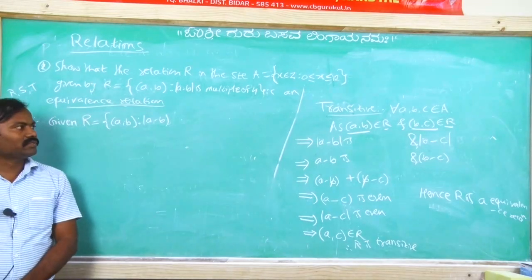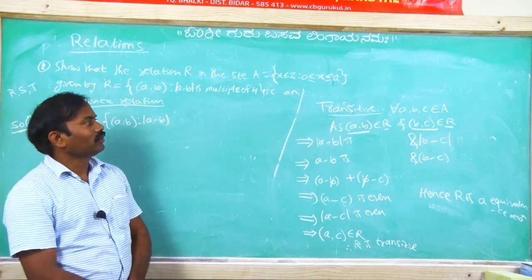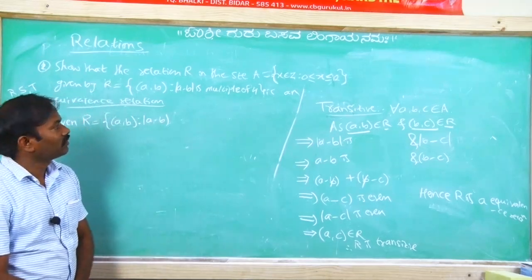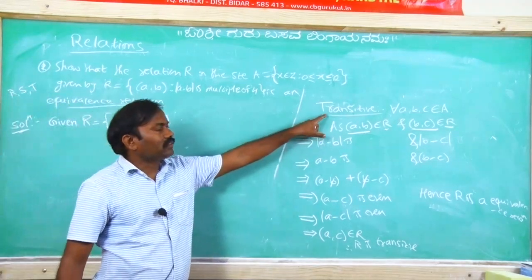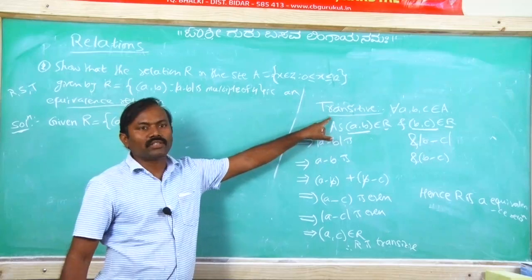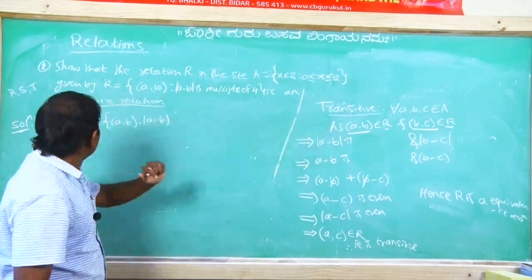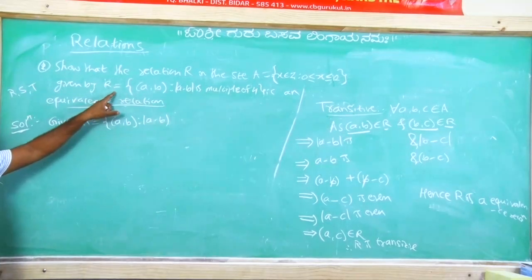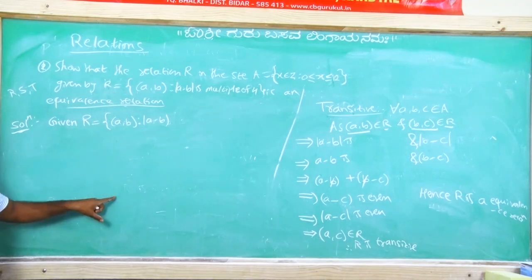Due to some technical problem, I have come to the last relation: transitive relation. I have already completed the previous example covering reflexive and symmetry relation.